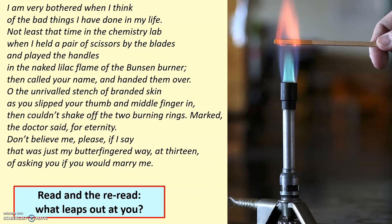So here it is. I will read it through the first time, and then I'll ask you to pause and re-read it a second time to yourself and decide which bits leap out at you. The picture on the right-hand side is a clue, by the way — the Bunsen burner. Here we go: 'I am very bothered when I think of the bad things I have done in my life, not least that time in the chemistry lab where I held a pair of scissors by the blades and played the handles in the naked lilac flame of the Bunsen burner, then called your name and handed them over. Oh, the unrivaled stench of branded skin as you slipped your thumb and middle finger in, then couldn't shake off the two burning rings, marked, the doctor said, for eternity. Don't believe me, please, if I say that was just my butter-fingered way at 13 of asking you if you would marry me.'